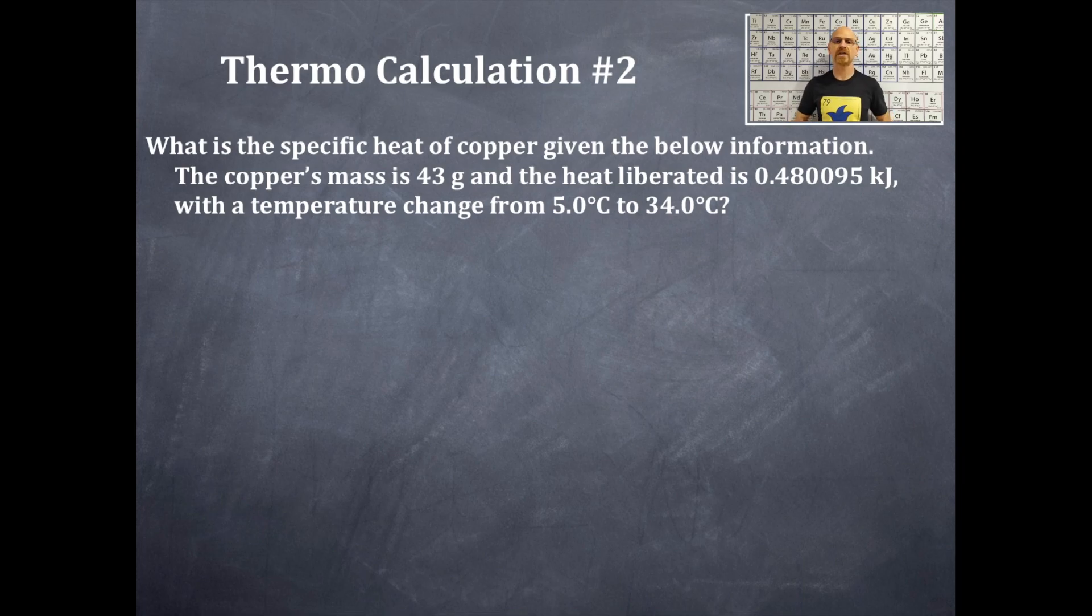The question is what equation are we using in this calculation and how do we go about this problem here? This is of course the equation that we're using and this is q equals mc delta t and we've gone over this equation a couple of different times. Make sure you review those videos. q equals mcat. That's how I remember it.